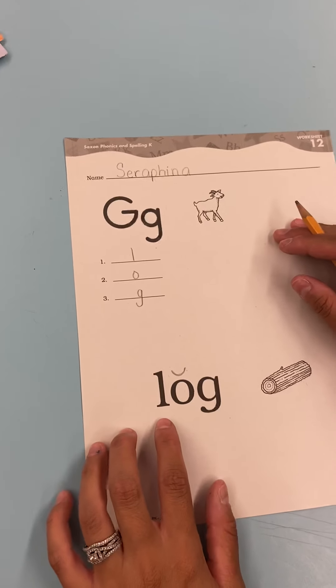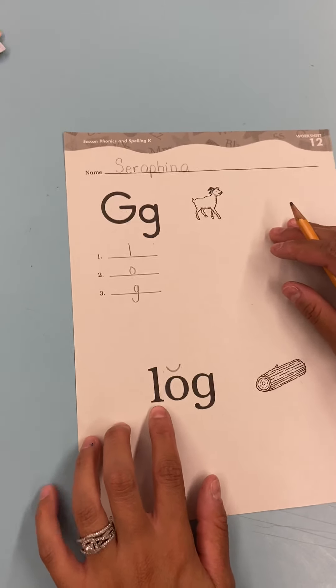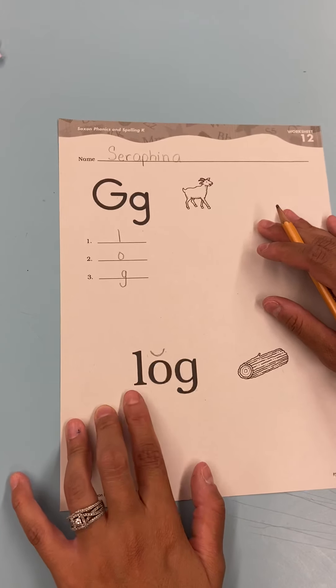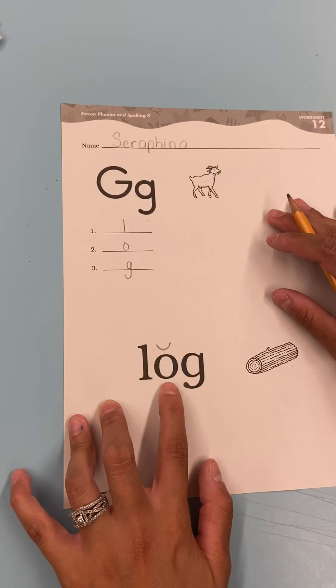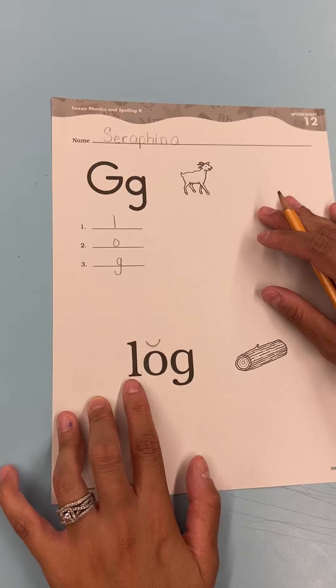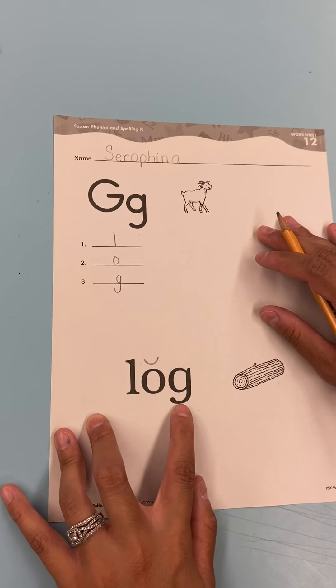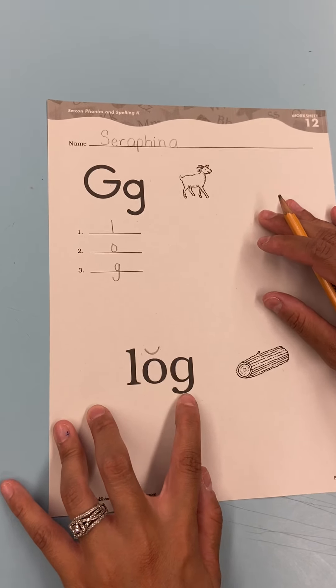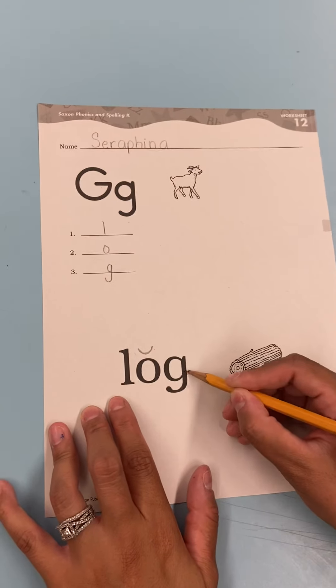Okay. Now we're going to try to read this word together. We're going to put the first two sounds together and then we'll add the last one. We know that L says L. The next letter says O. And the last letter says G. Let's put the first two letters together. L-O. L-O. L-O. Now we're going to add the G sound. L-O-G. L-O-G. You just made your first word. Please draw a line from the word log to the picture.